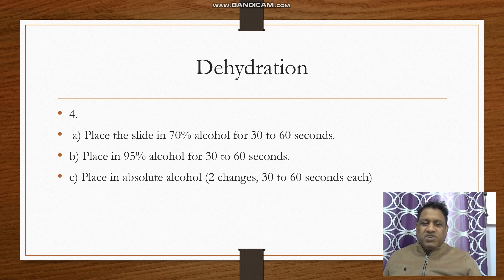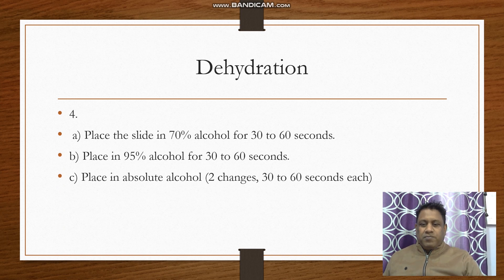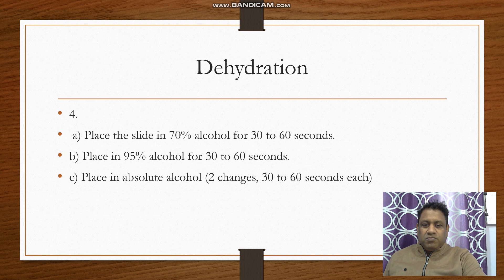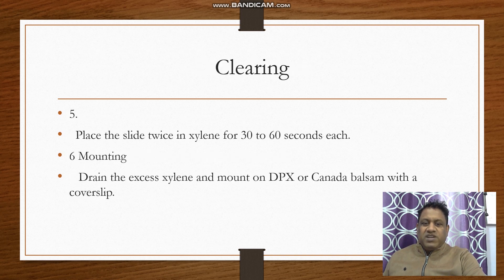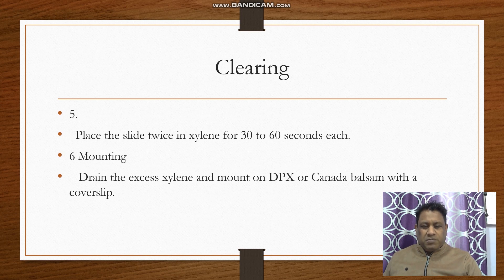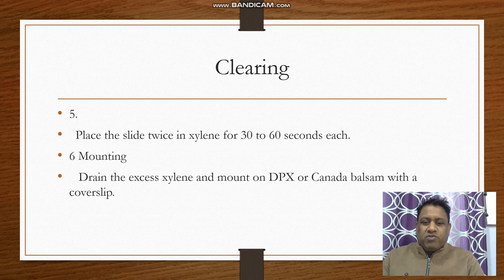The fourth step is dehydration — removal of excess water using alcohol. Place the slide in 70% alcohol for 30 to 60 seconds, then in 95% alcohol for 30 to 60 seconds, then in absolute alcohol for two changes of 30 to 60 seconds each. For clearing, place the slide twice in xylene for 30 to 60 seconds, which clears away excess stain from overstained structures.